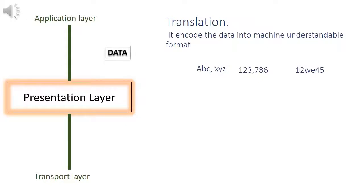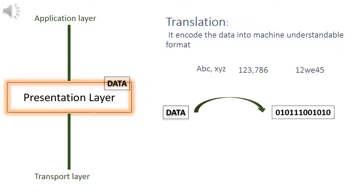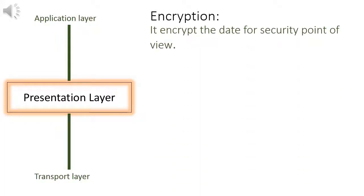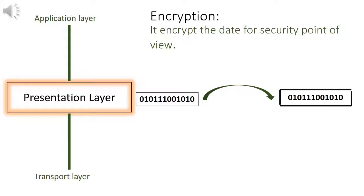Presentation layer does the job of encoding or translation, meaning it converts the characters or numbers to machine-understandable format. Second work of presentation layer is encryption. Encryption is done for end-to-end reliable communication so that data can flow without any security risk.